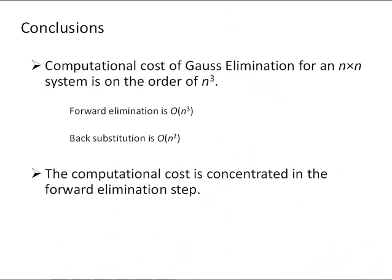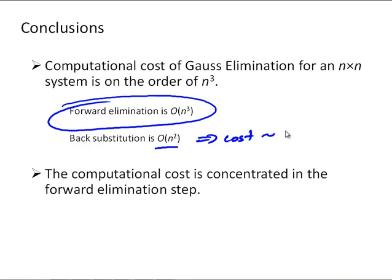So, our main conclusion then is that the computational cost of Gauss elimination is on the order of n cubed and that's all concentrated in that forward elimination step. The back substitution step, the cost is on the order of n squared, and as we get into systems that are large enough where the computational cost matters, that n squared cost is roughly negligible. And we'll take advantage of this to look at some possible improvements for certain applications of linear systems in the next video.